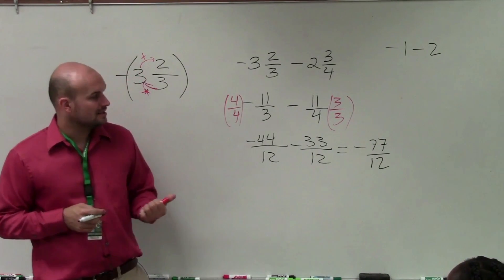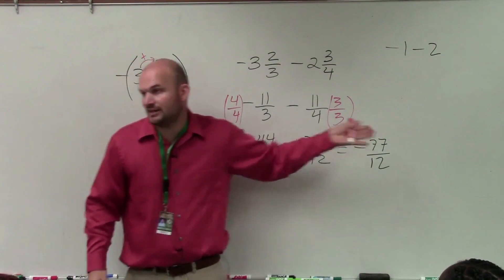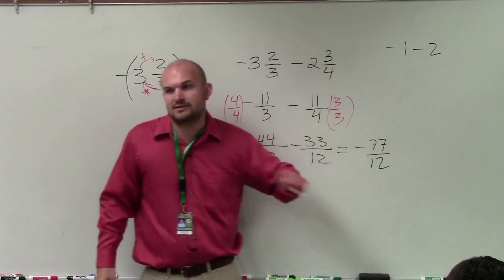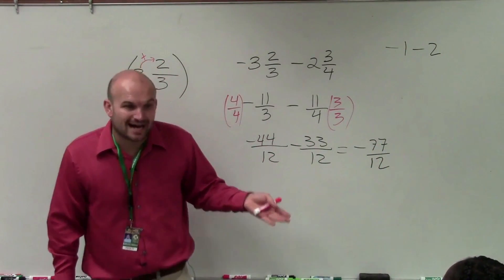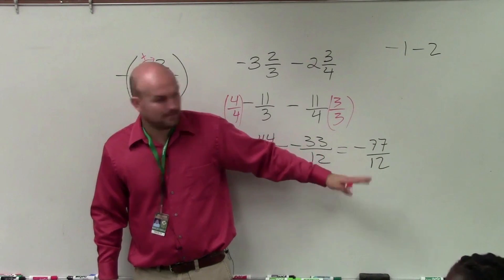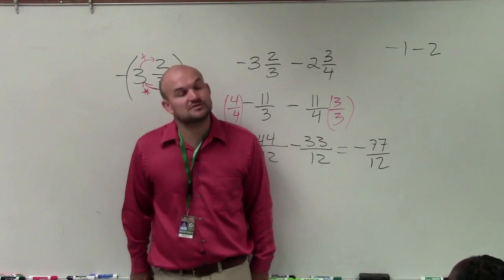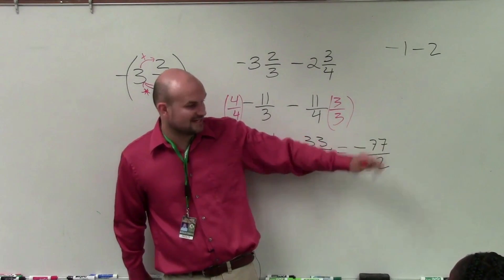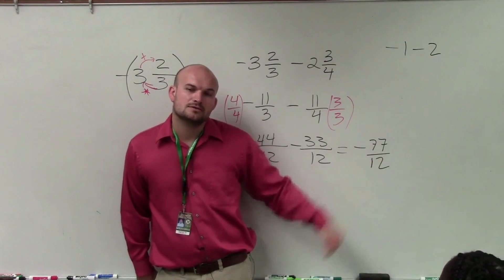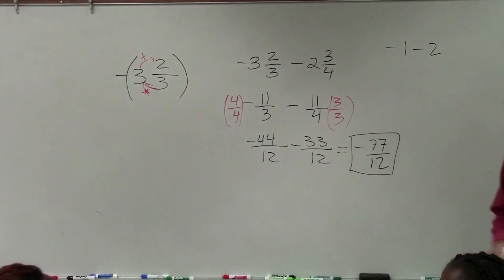Now we want to see if we can simplify negative 77 over 12 by dividing by common terms. First I check: is it even? 77 is not even, so I can't divide top and bottom by 2. Next, can I divide by 3? We know 3 goes into 12 four times, but 77 is not divisible by 3. I'm not aware of any other factor of 12 that goes into 77 — 11 doesn't go into 12. So negative 77 over 12 is your final answer.